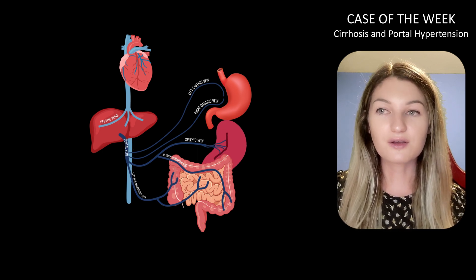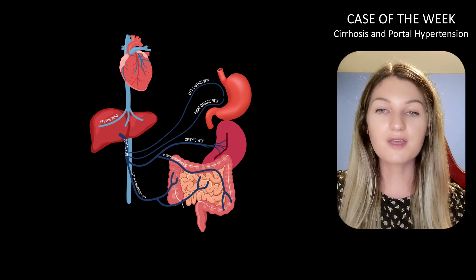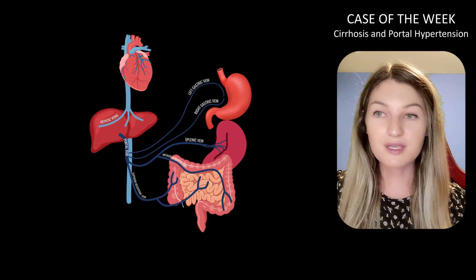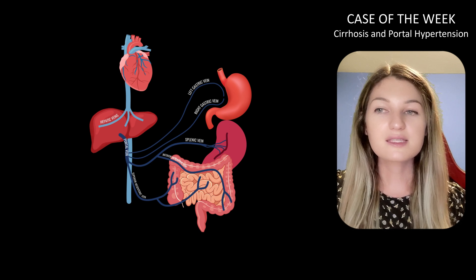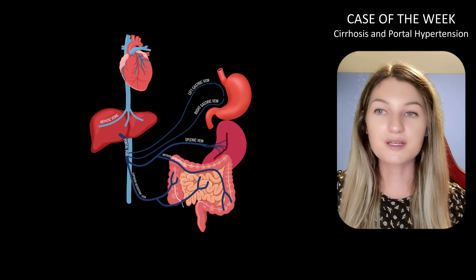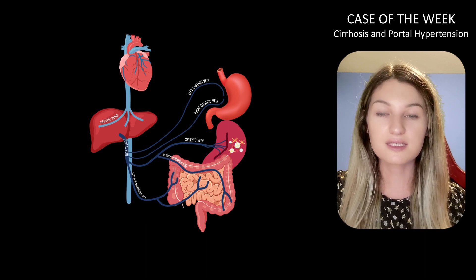Splenic enlargement is also common. As the pressure increases in the portal vein, it also increases in the splenic vein, causing the spleen to become congested and enlarged as blood flow through the spleen becomes more difficult. We can't see this on CT, but hypersplenism also commonly occurs in parallel with splenic enlargement, where the spleen starts to destroy too many platelets and blood cells, leading to various cytopenias.